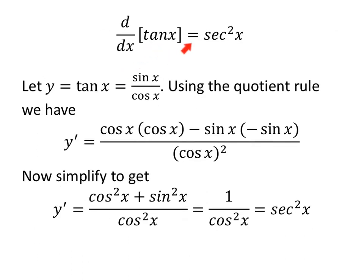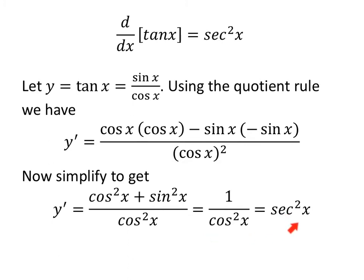The derivative of tangent of x is supposedly secant squared. Let's see why. Let y equal tangent of x, which we know to be sine of x over cosine of x. Using the quotient rule: low cosine of x, d high — derivative of sine is cosine — minus high, d low — the derivative of cosine is negative sine — all over cosine squared. Cosine x times cosine x is cosine squared x. Minus sine x times negative sine x is positive sine squared x, all over cosine squared. By the Pythagorean identity, cosine squared x plus sine squared x equals 1, so we get 1 over cosine squared x, which is secant squared of x.